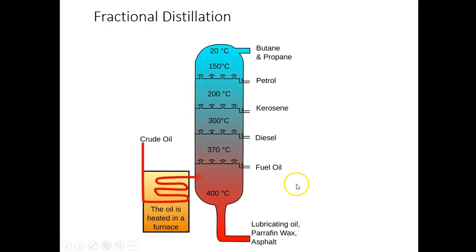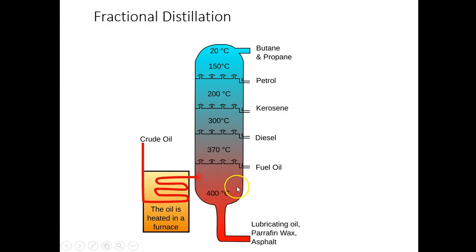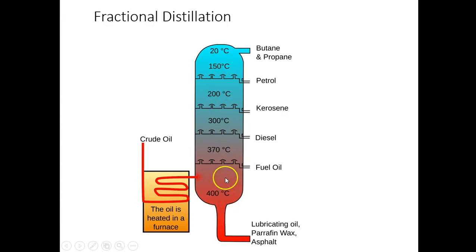Fractional distillation uses a fractionating column. Crude oil is heated and input into the column. Fractions with very high boiling points stay at the bottom, while those with lower boiling points remain gaseous and rise up the column. As they are separated, they can be drawn off to produce the individual fuel fractions.